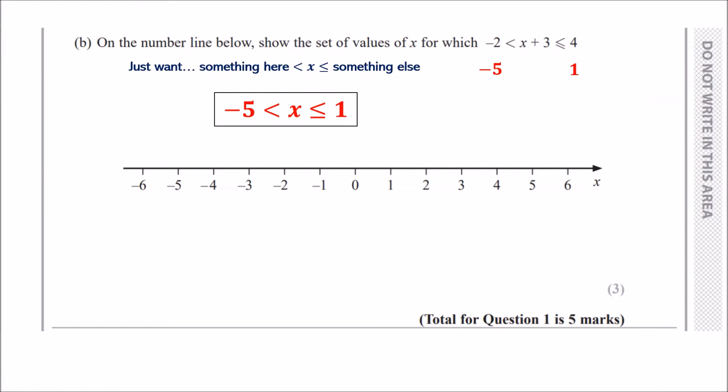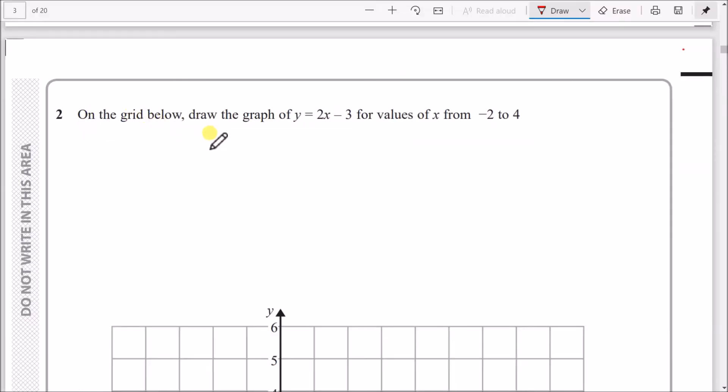To plot this on the number line, draw a straight line from minus 5 to 1. Now be careful here—you've got less than and a less than equal sign. Draw two circles: the one that's equal to is shaded in, meaning you include it, and the one you don't shade in you don't include. So it just misses minus 5 but 1 is included.